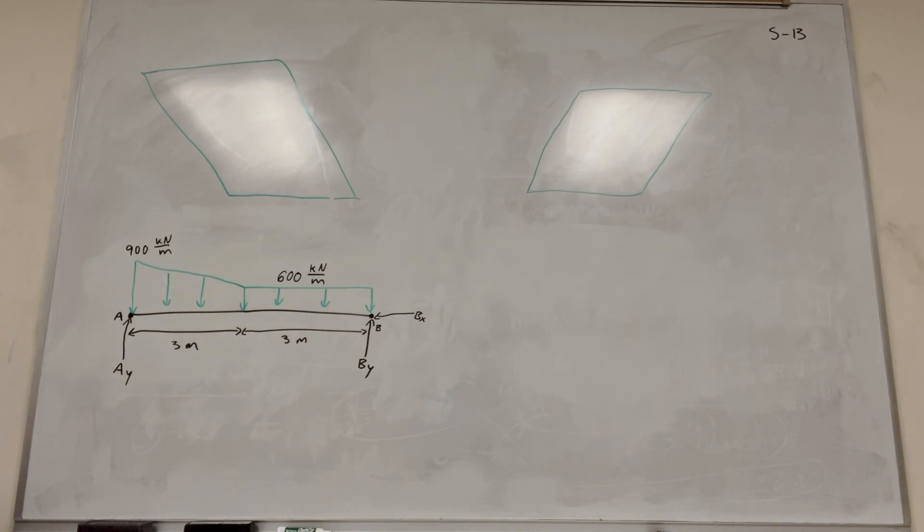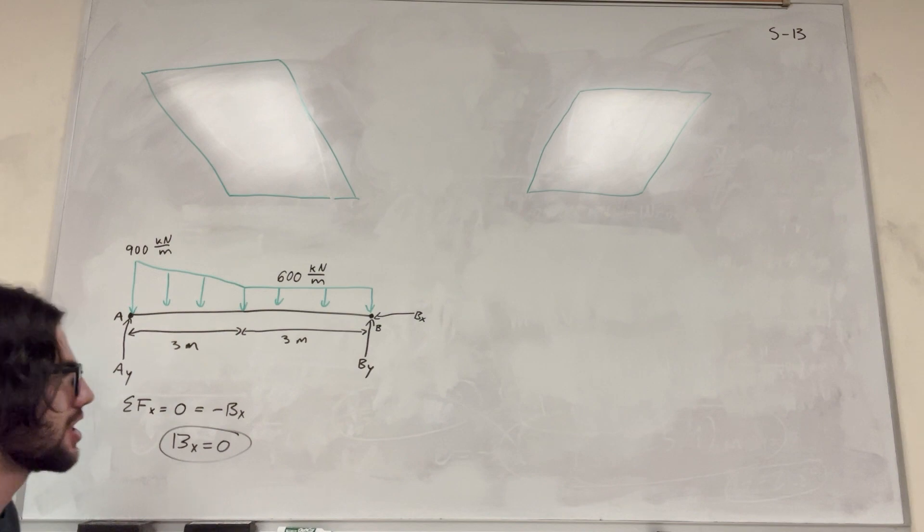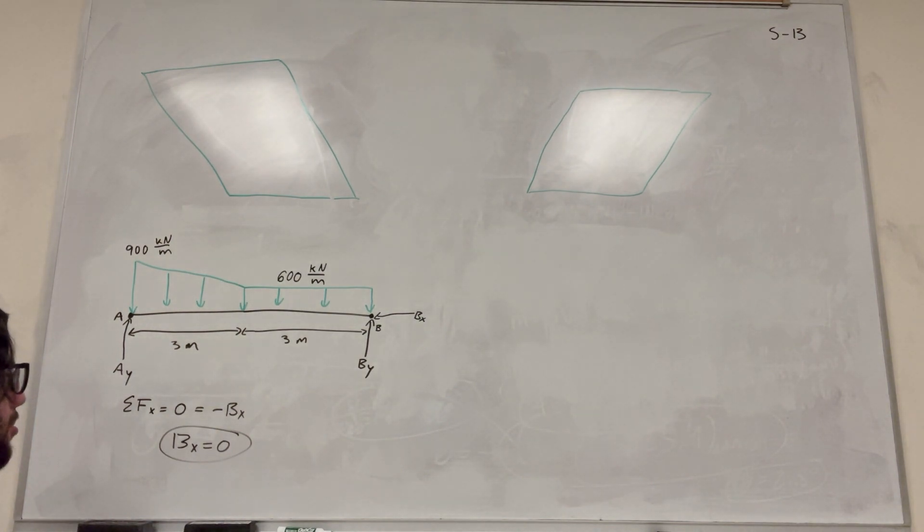The first and easiest unknown is going to be sum of the forces in the X direction. So if we do sum of forces in X direction, it's going to equal zero because we're at equilibrium and we're going to notice that we don't really have any forces acting in the X direction except B_x, so negative B_x. This just tells us that B_x is equal to zero. There's no forces acting in the X direction, so B doesn't have to apply any force.